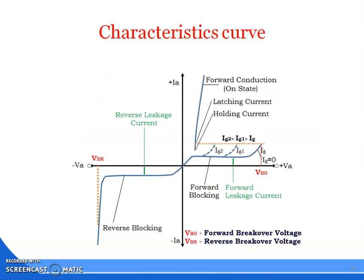This is the characteristic curve of the SCR. This is a curve drawn between anode voltage VA and the anode current IA. The curve drawn between anode voltage VA and anode current IA is known as the characteristic curve of the SCR. We have to study the entire characteristic curve in three different modes or regions.